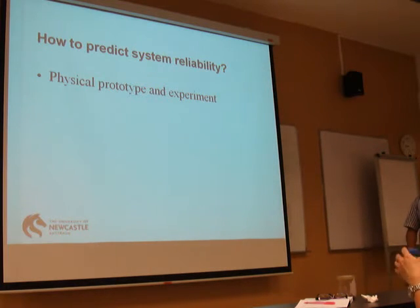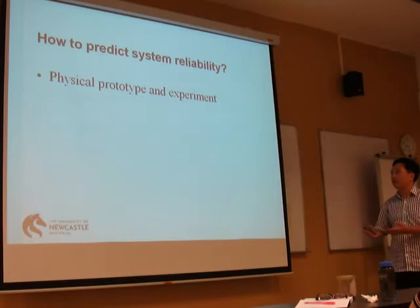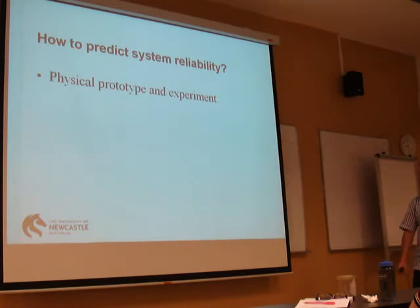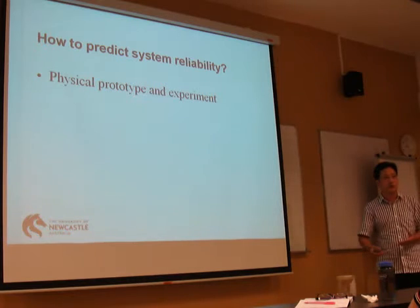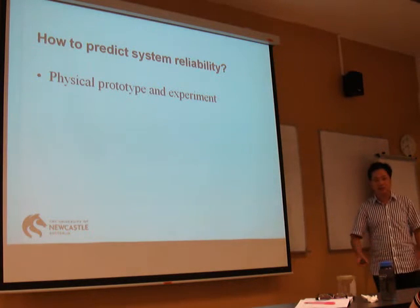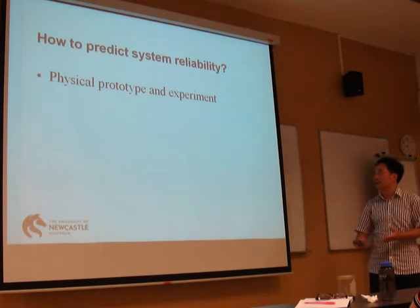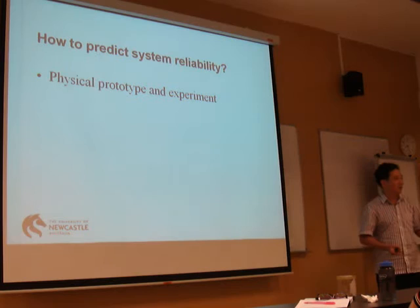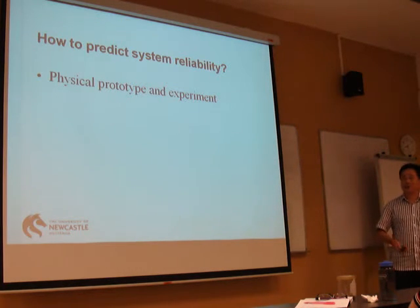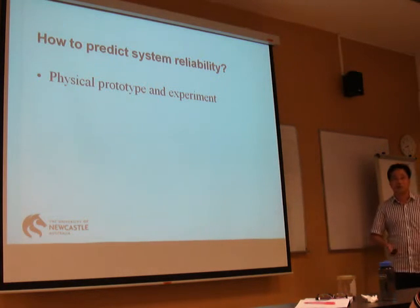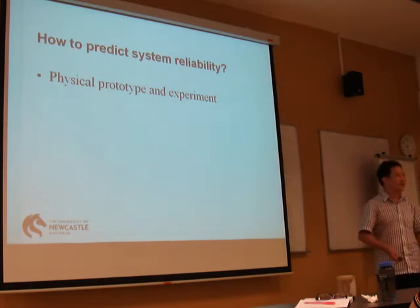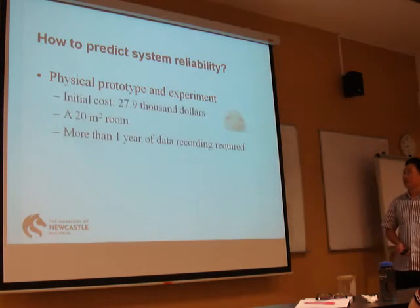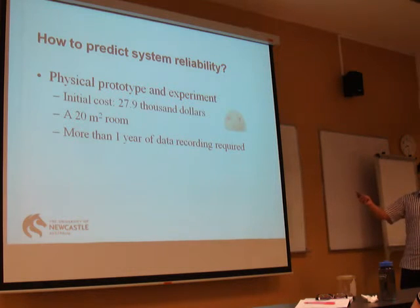How do we predict system reliability? One straightforward method is to build a physical prototype and run experiments. For example, over one year you can determine whether the system is very stable — zero hours of downtime — or terrible, such as 500 hours not available during the year.